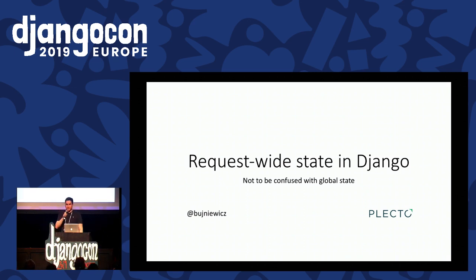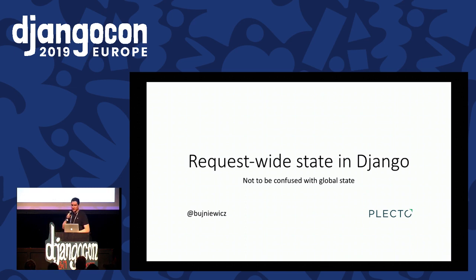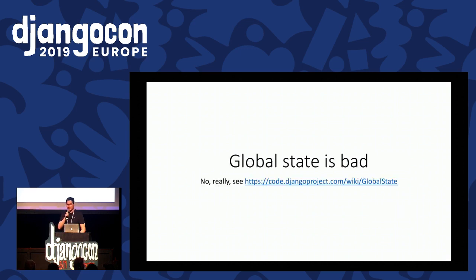Hi, I'm Kris. You can find me on GitHub and Twitter at Bujinovic. I'm currently working at Plekto as a senior software developer and head of Warsaw Office. I'm going to talk really quickly about keeping request-wide state in Django. That's not to be confused with global state, because global state is very bad — it lacks isolation. You can leak pretty much anything to another request, for example user data. Django tries really hard to get rid of pretty much all instances of global state.